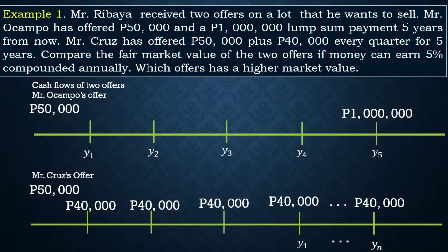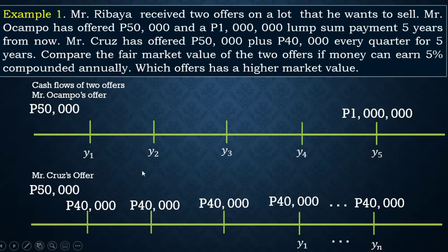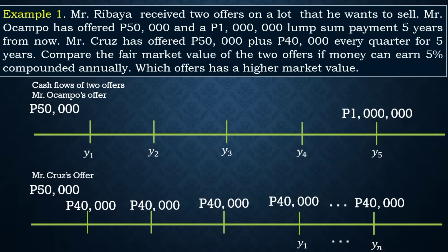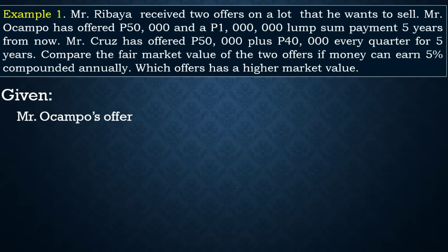For Mr. Cruz's offer, there is a 50,000 down payment plus a regular payment of 40,000 every quarter. We will compare the fair market values of the two offers to determine which one Mr. Ribaya should choose — the one with the higher fair market value.